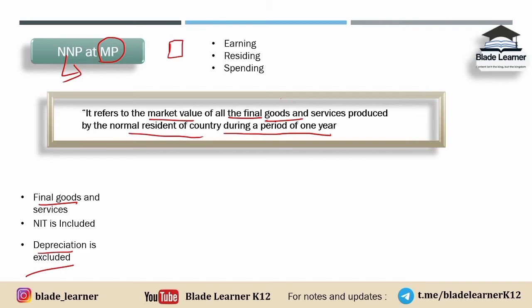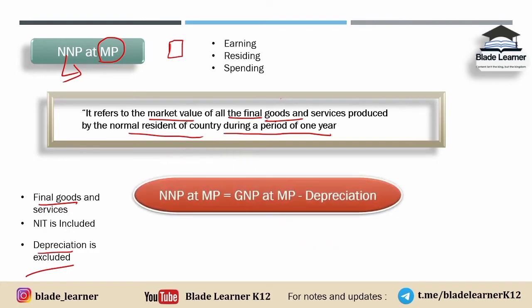So depreciation excluded hi hoga — jab bhi aap gross se net mein aayenge, depreciation exclude karna padega. Net mein hamesha depreciation excluded hota hai. Formula ke hisaab se: agar aapke paas GNP at MP diya hua hai aur aap NNP at MP nikalna chahte hain, toh depreciation ka amount ghataana padega. Jab tak depreciation nahi ghataayenge, tab tak NNP pe nahi pohunchenge — kyunki net pe pohunchne ke liye we need to subtract depreciation. So the concept of NNP at MP: final goods and services lete hain, NFIA included hai kyunki market price hai, and depreciation is excluded kyunki ye net hai, not gross.